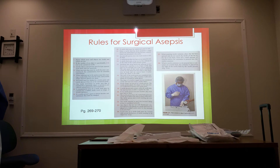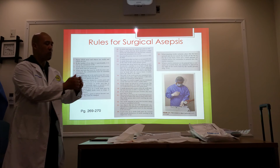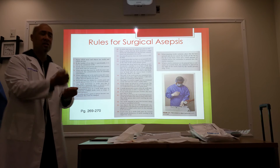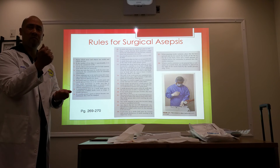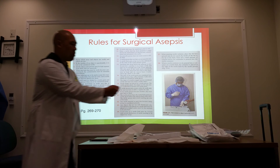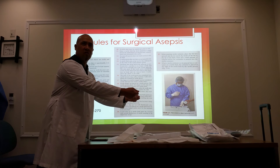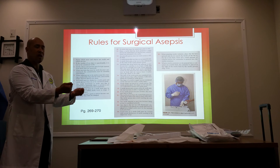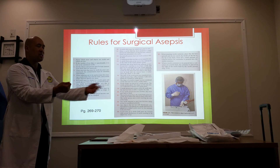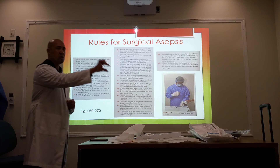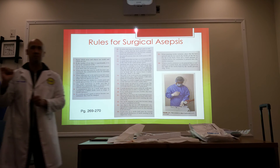Number twelve: an unsterile person does not reach across a sterile field. As the circulator opening a package, I would not hold it over the sterile field. I open it to the side, and the sterile individual comes and takes it from me.